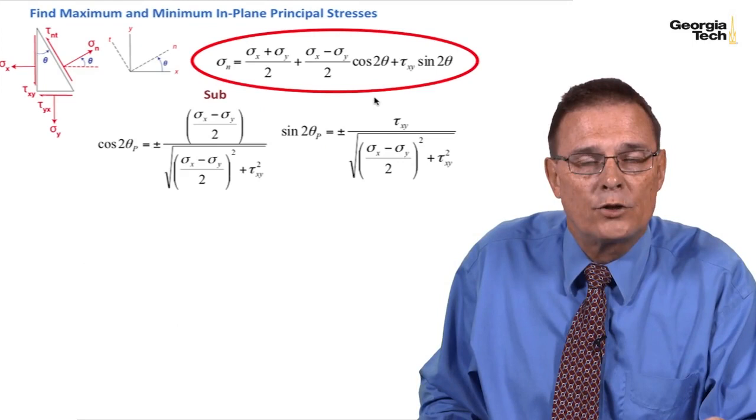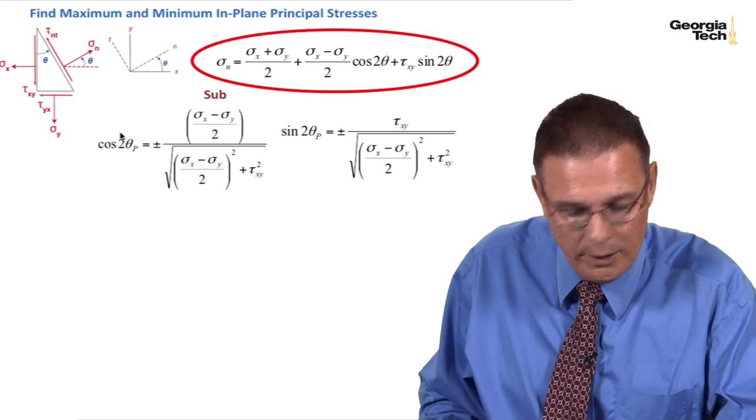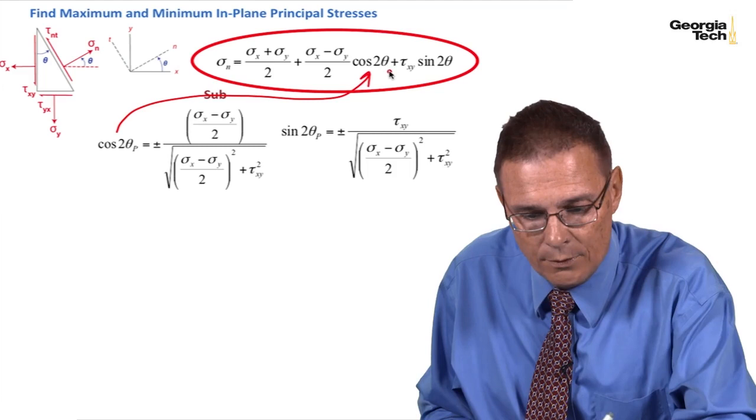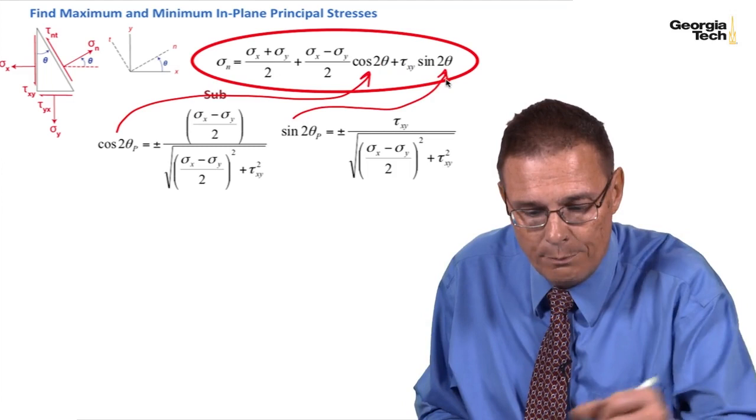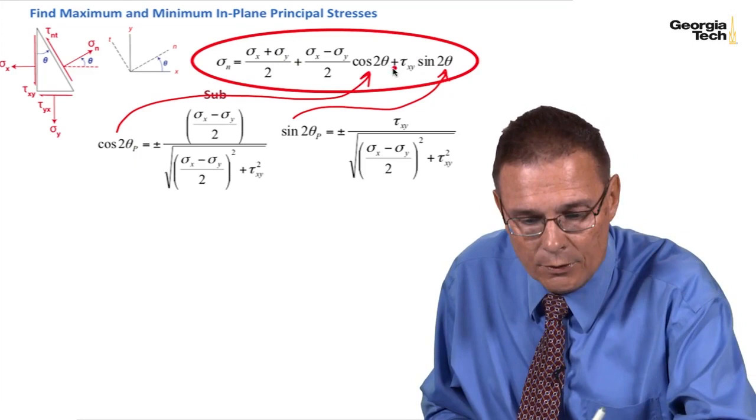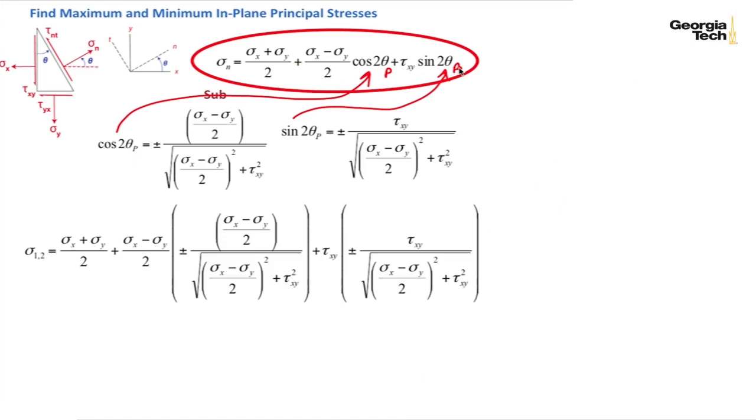And now we can take our stress transformation equation for sigma sub n, the normal stress, and we can substitute in cosine 2 theta sub p. So this should be theta sub p now and sine 2 theta sub p which will end up being theta sub p now. So now we're talking about specific angles. So these will be theta sub p and theta sub p. And this is the result I get by substituting those in. Okay? Plus or minus.